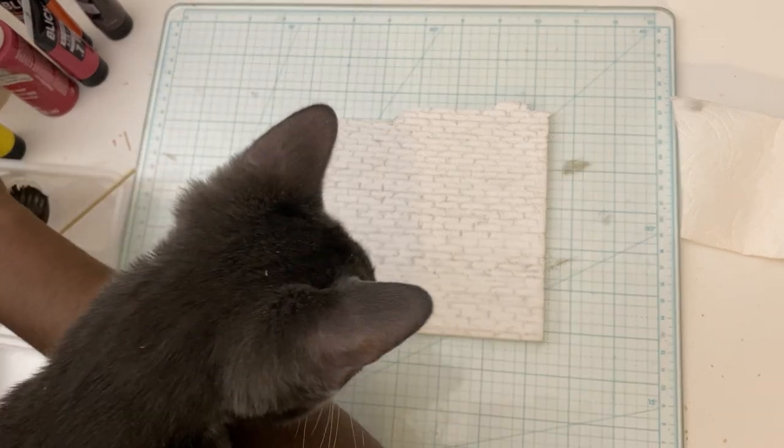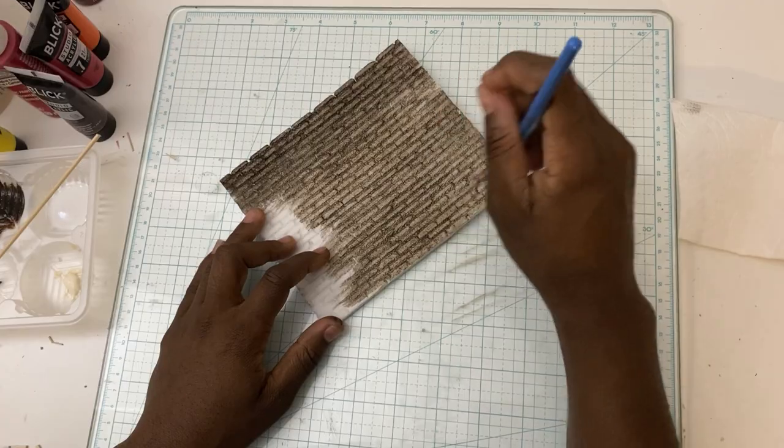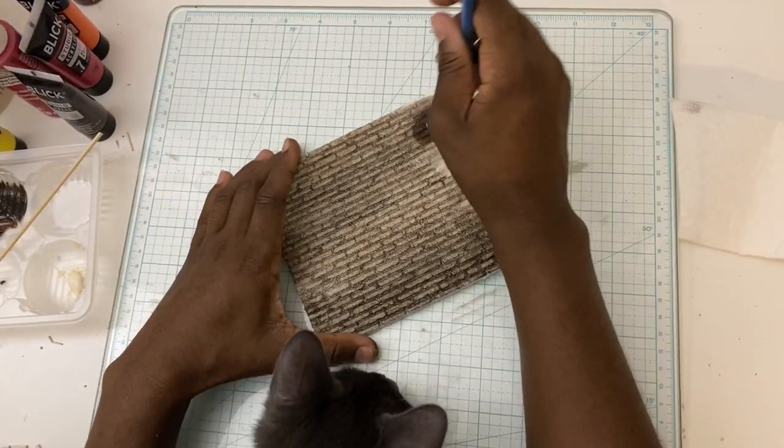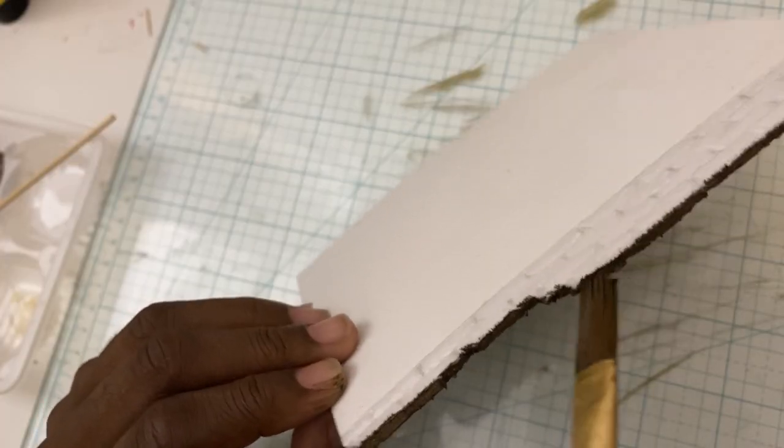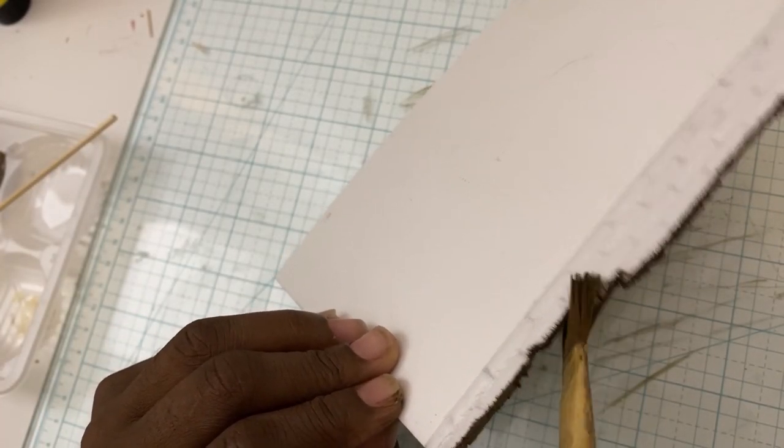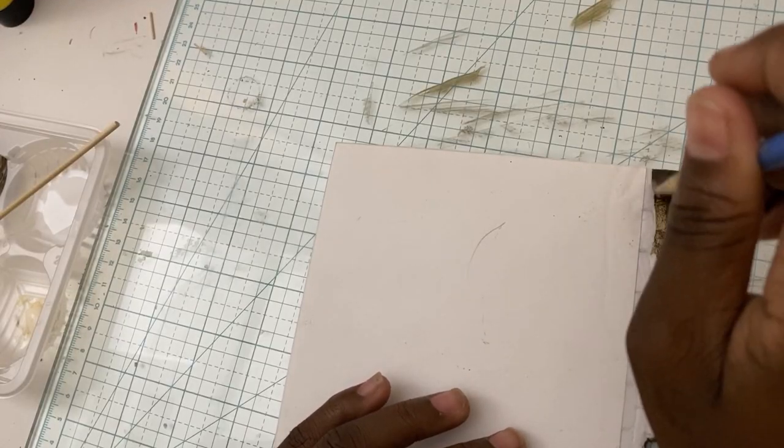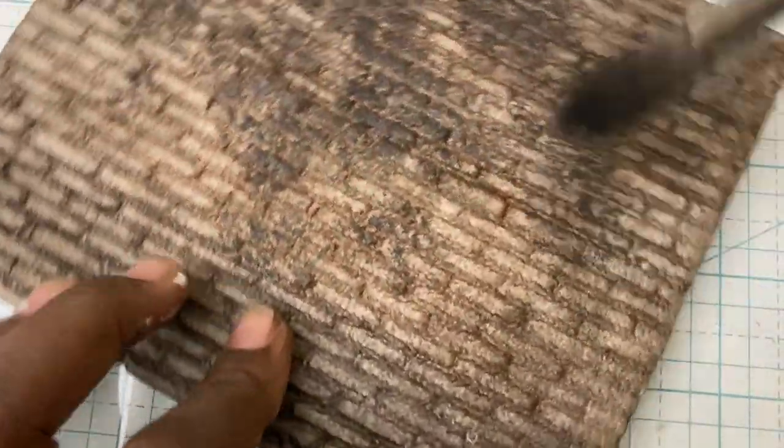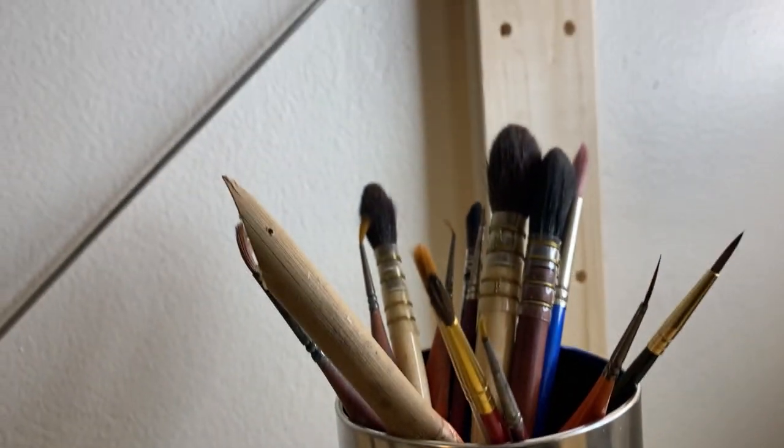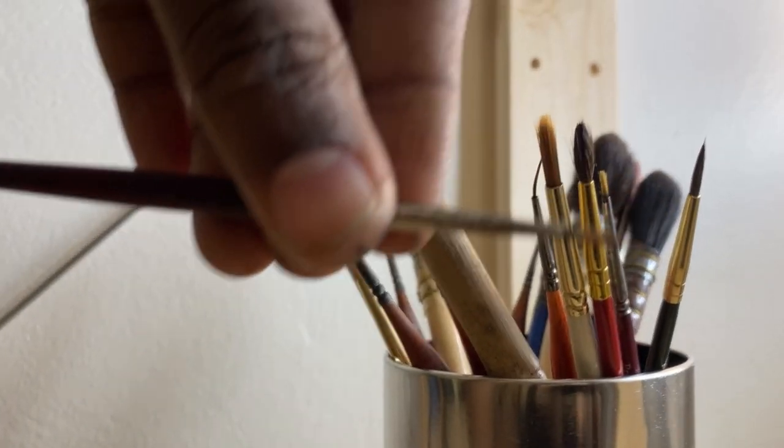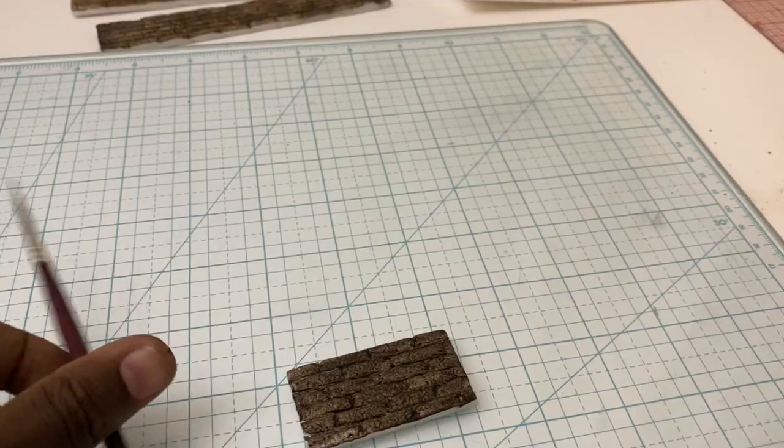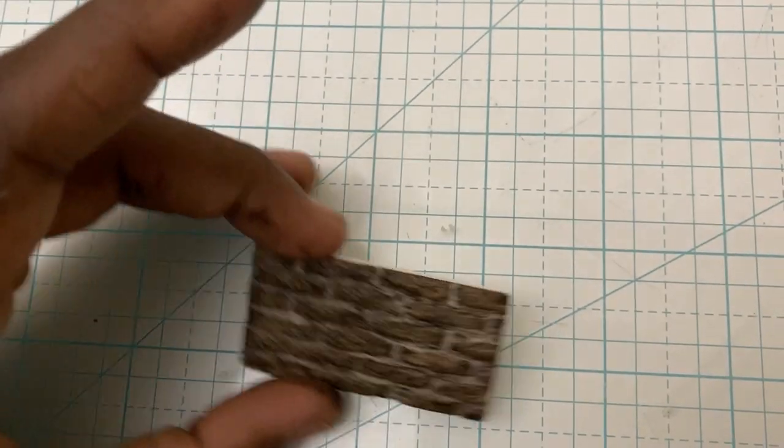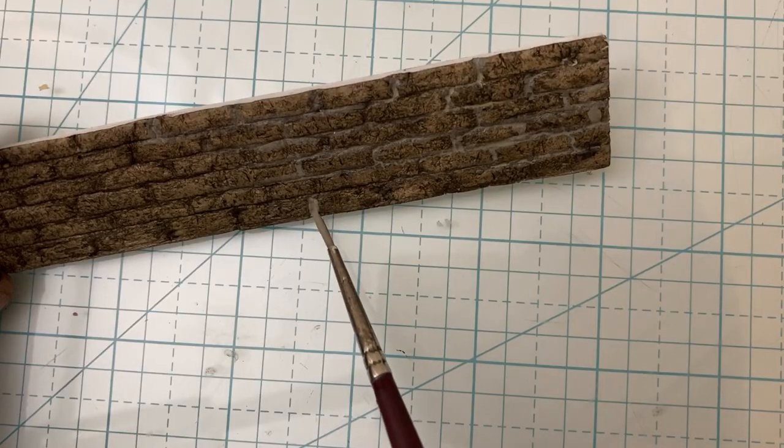This is the jar where I keep my nicer brushes. We want to have a really sharp point on our brush when we go in between all of these tiny, tiny, tiny little bricks. Okay, bricks are done.